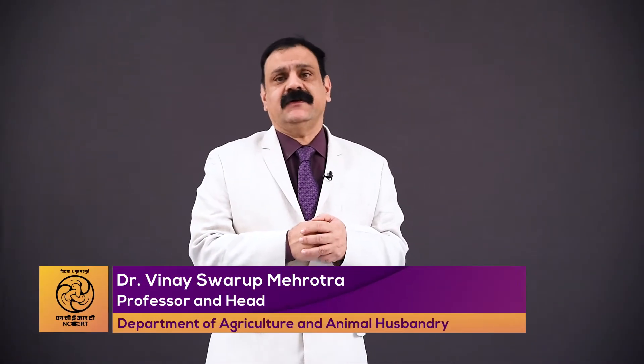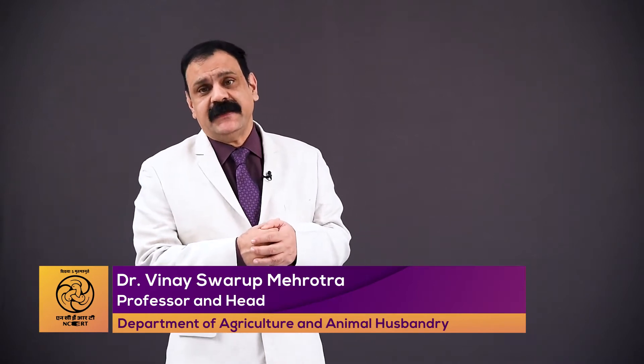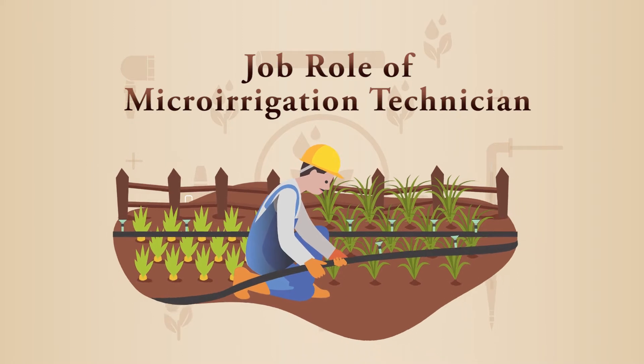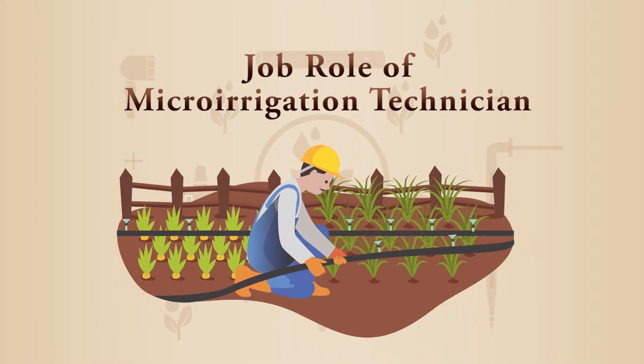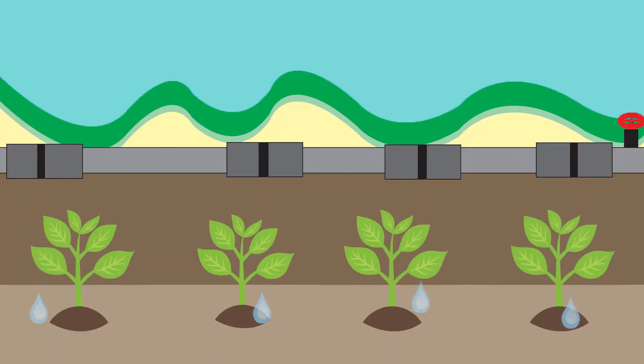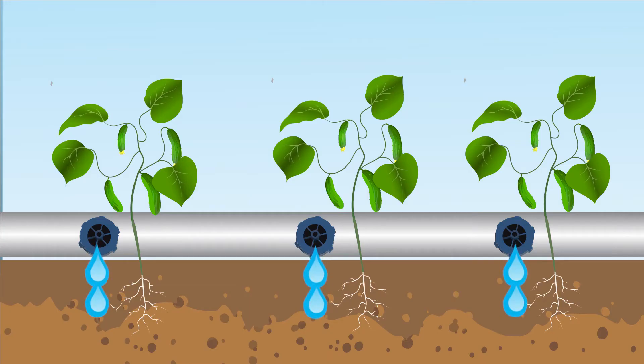Hello viewers! In this video lecture today, we are going to talk about micro irrigation systems. This is Session 1 of Unit 1 on introduction to micro irrigation systems for the job role of micro irrigation technician. Micro irrigation is the slow application of continuous drips, tiny streams, or miniature sprays of water above or below the soil surface.